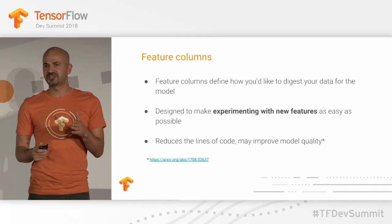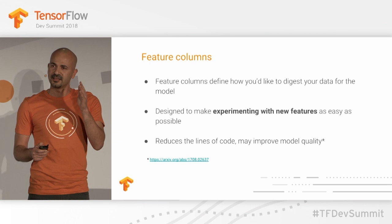I worked on a team where we were using machine learning to improve a product, and I realized that experimenting with features is one of the most important things. That's why we put all of that experience into the APIs. One of the key topics in your talk was feature columns, and proper use of feature columns can help reduce your lines of code.